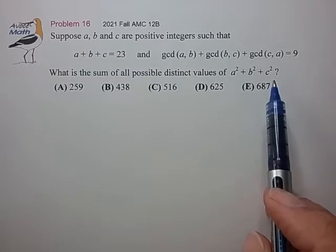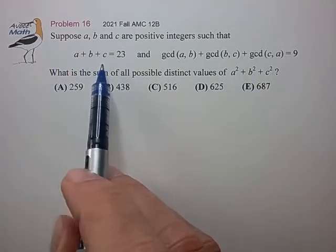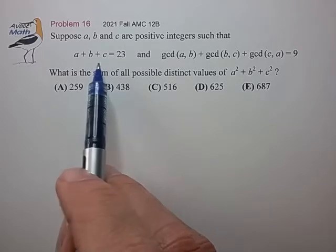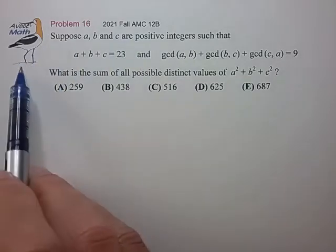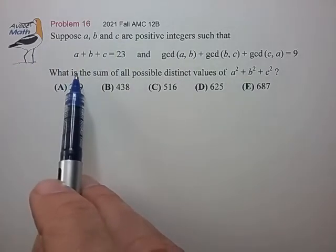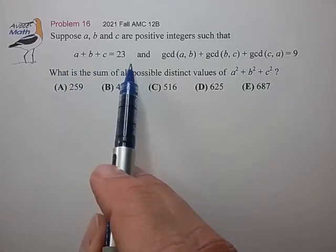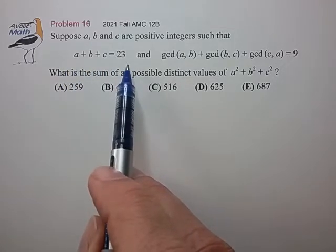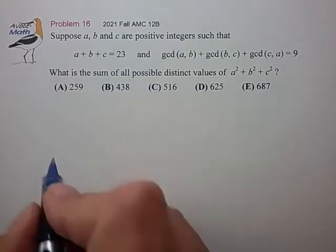Right off the bat I notice that all these equations are symmetric in a, b, and c, by which I mean we can exchange any pair of variables and the equations are unchanged. Now this is a very helpful symmetry. For example, the solution set for this first equation occupies a triangular plane section in the a, b, c space. So let's try to draw that.